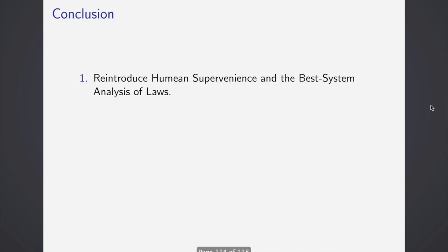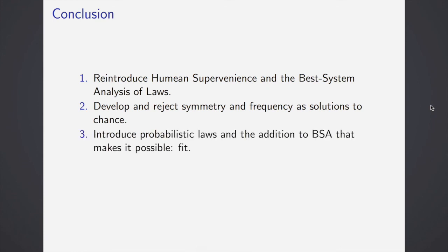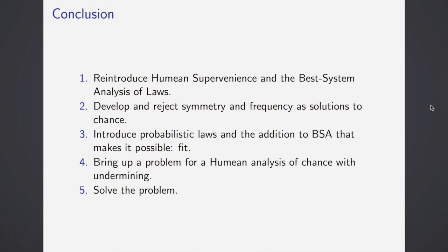Conclusion. Let's go back over what we've done. We've reintroduced Humean supervenience and the best systems analysis of laws. We've developed and rejected two concepts of what might make chance in the world, symmetry and frequency. We've introduced probabilistic laws and the addition to the best systems analysis that made that possible was FIT. We brought up a problem for the Humean sense of chance, problem for FIT with undermining, and Lewis solved the problem. Thank you. And if you have any questions, feel free to email me or drop a comment below. Thank you.